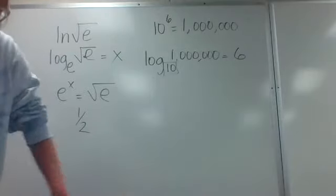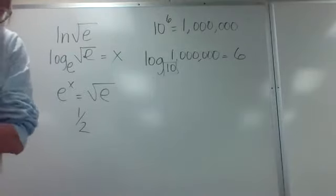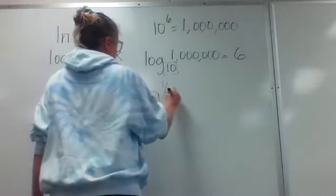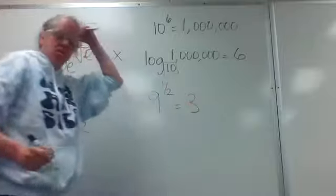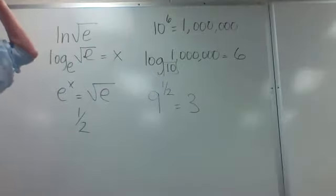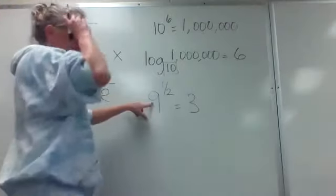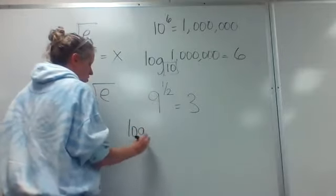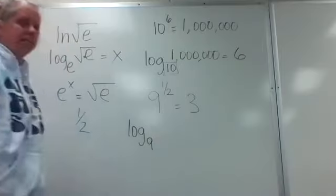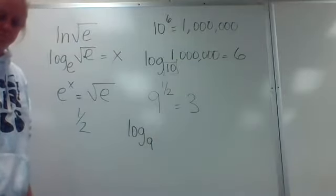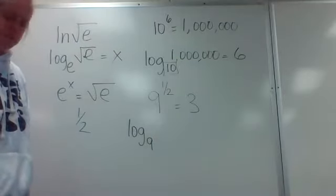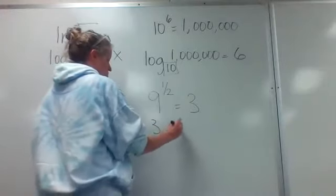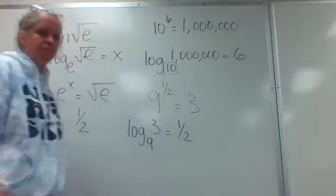Number 18: convert from exponential to log. Nine to the one-half power equals 3. The base of your exponent is also the base of your log. So: log base 9 of 3 equals one-half.